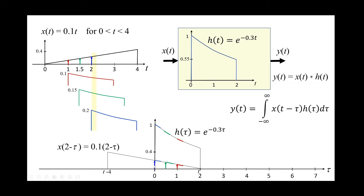At 2 o'clock exactly, the output will be the output due to this present input, plus the output due to an earlier impulse, plus the output due to input at 1 o'clock. The present input is hitting the system now, the earlier input hit the system half an hour ago, and the earlier still is 1 hour ago. The total output at 2 o'clock is this portion plus this portion plus this portion. For a continuous system, you plug t=2 into the expression.